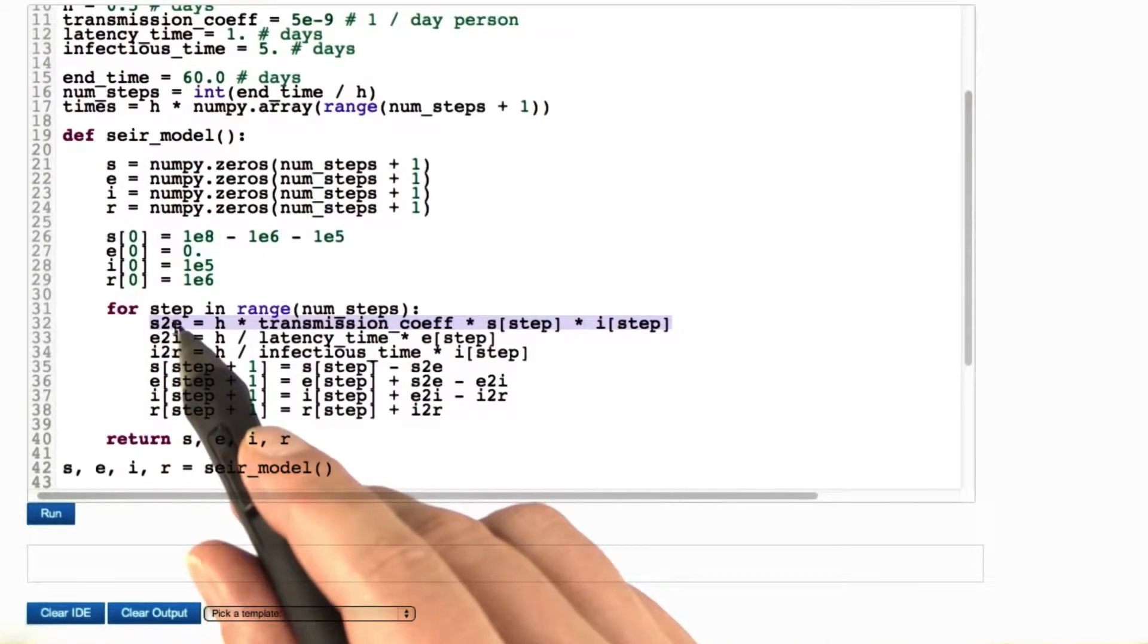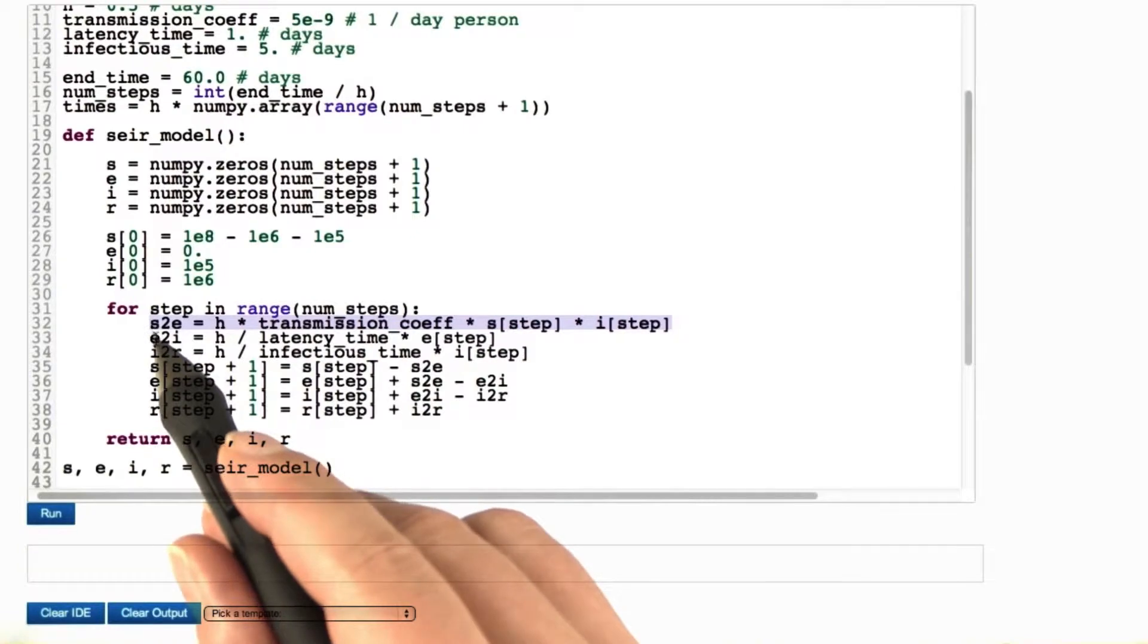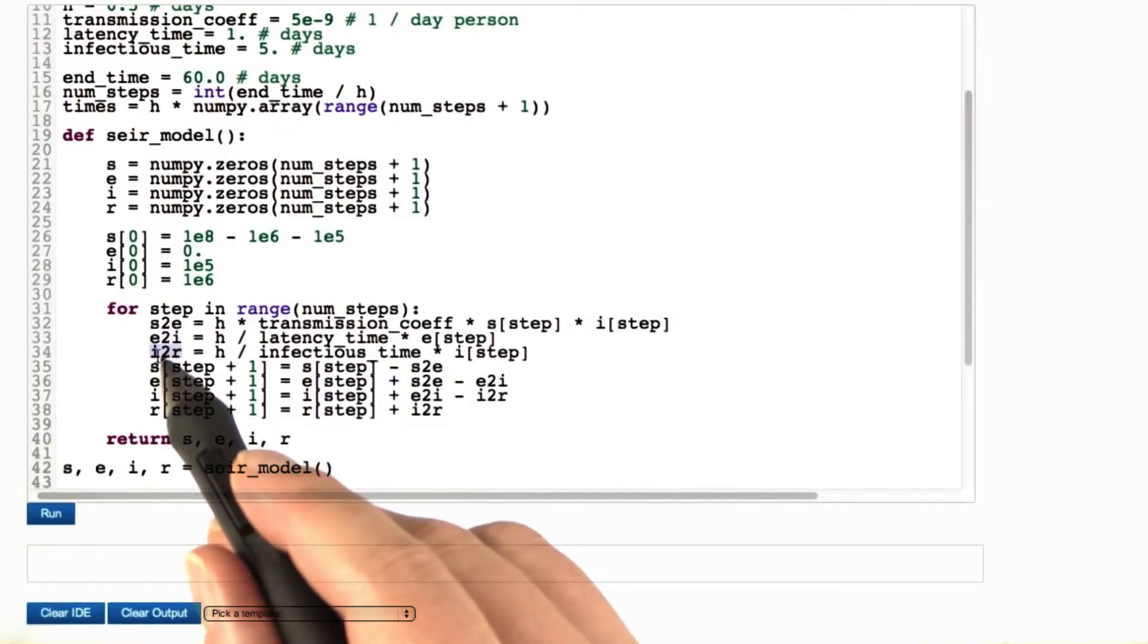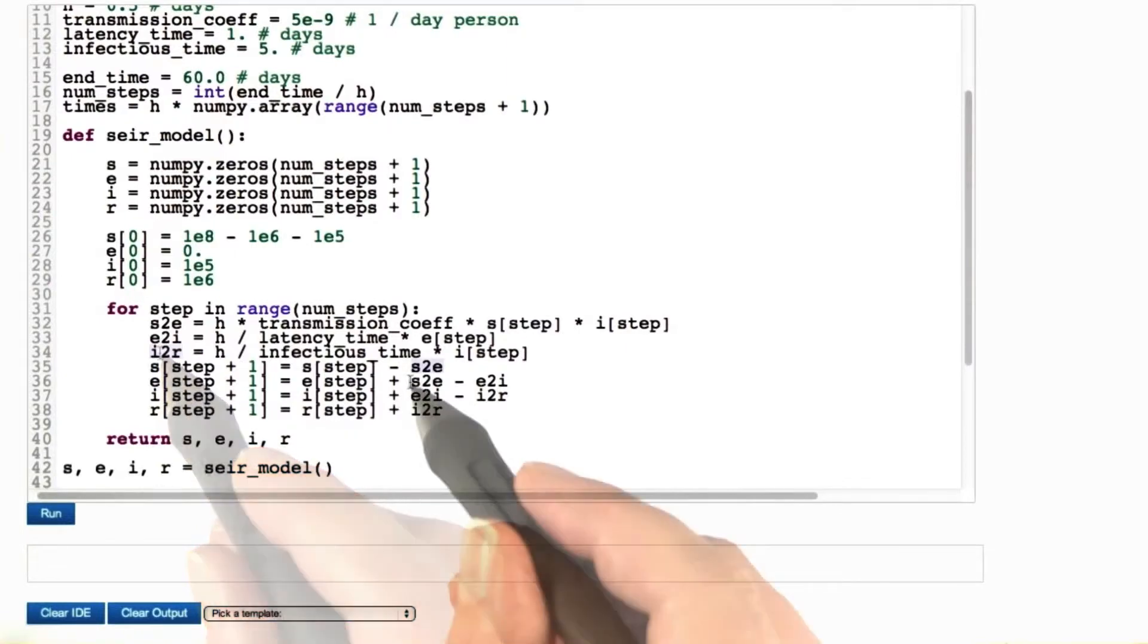One way of solving this is to find out which terms appear in several places. For instance, this one: the number of persons taken from the susceptible to the exposed compartment, then the number of persons taken from the exposed to the infectious compartment, and the number of persons taken from the infectious to the recovered compartment.